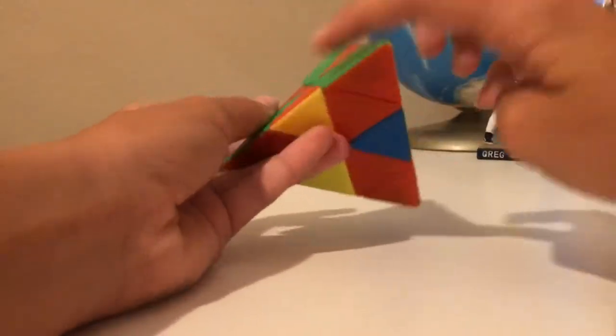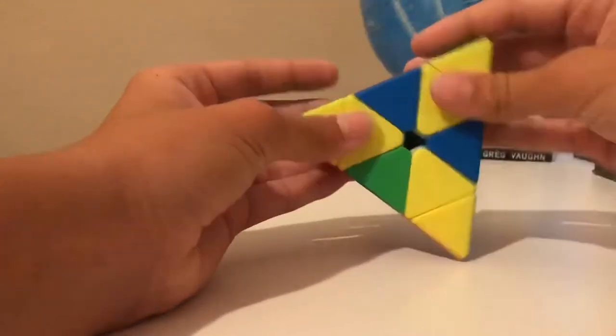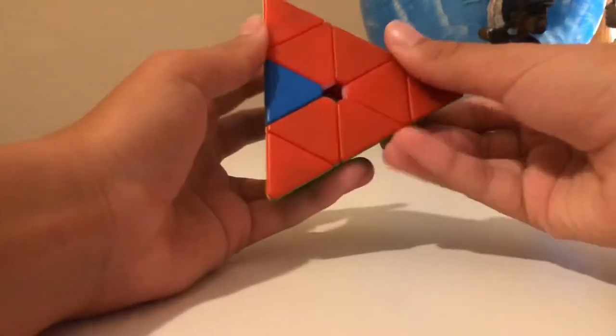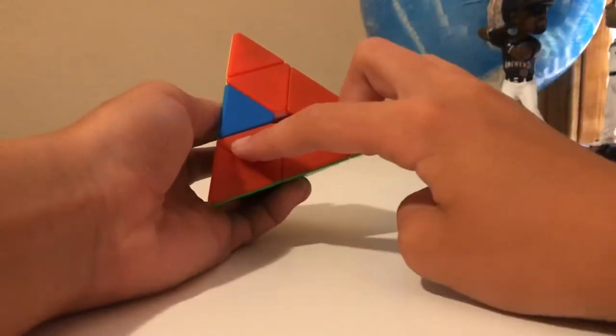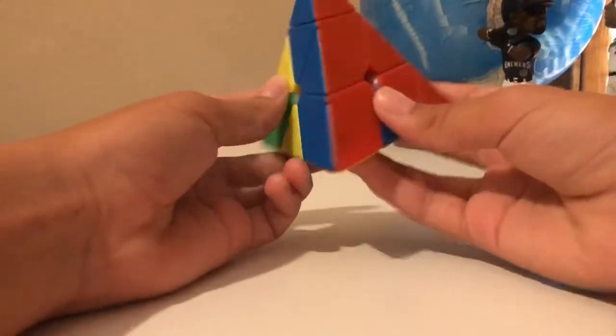I'm assuming you already know how to solve a Pyraminx, so you should know the sledgehammer. We can sledgehammer this piece in, and that lines up. We can do that with one other piece, so that with whatever color you're solving, it creates this V shape, and these colors are solved along with it.